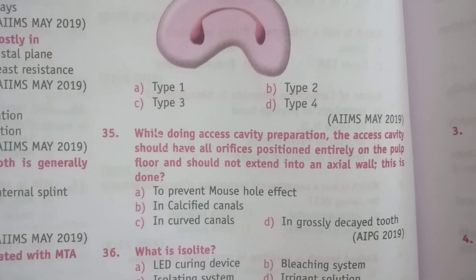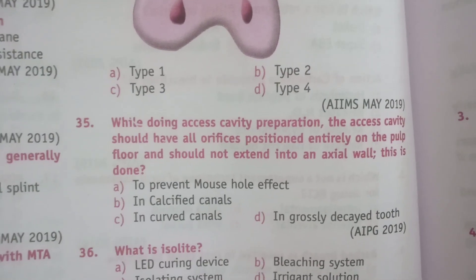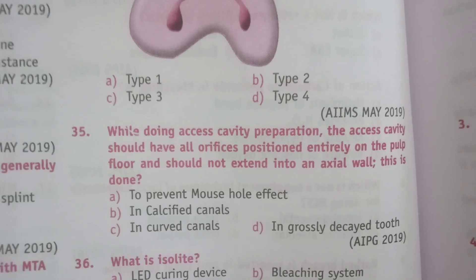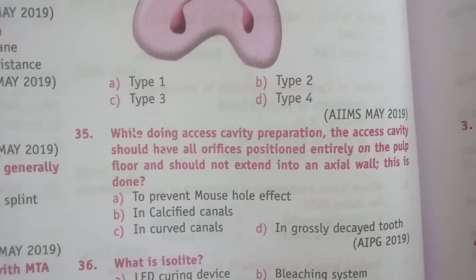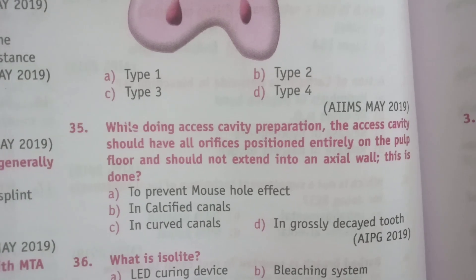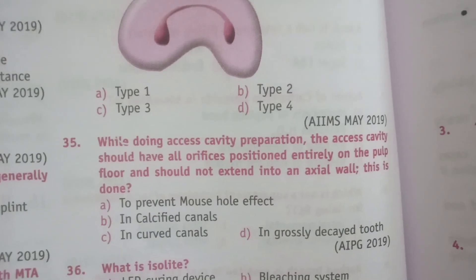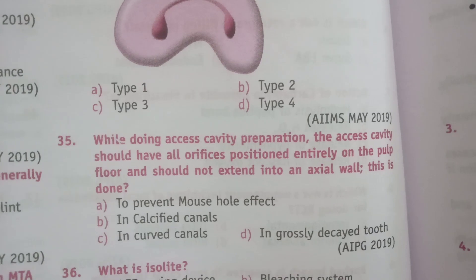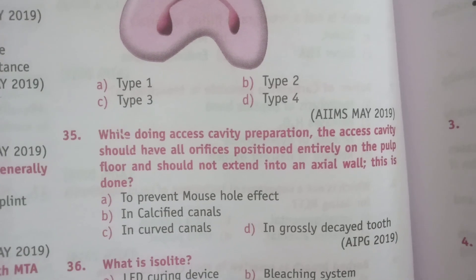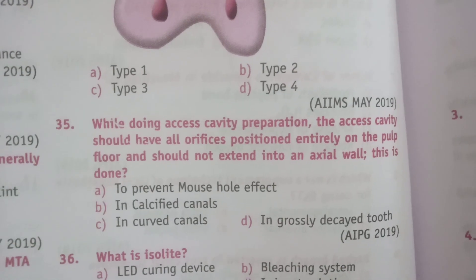While doing access cavity preparation, all orifices should be positioned entirely on the pulp floor and should not extend into the axial wall. The reason is to prevent the mouse hole effect. The answer is A, to prevent the mouse hole effect.